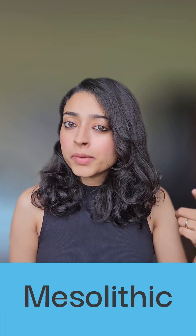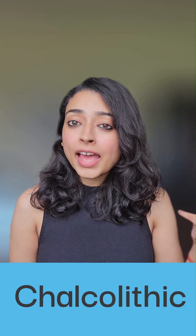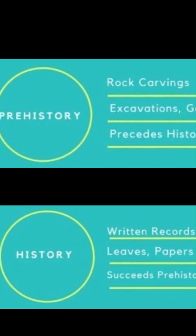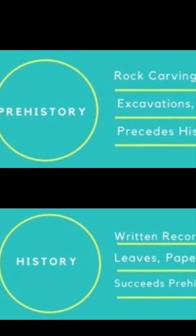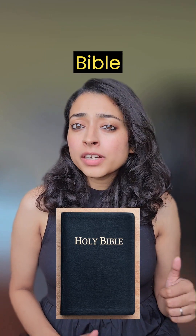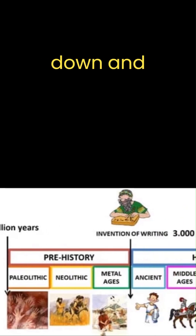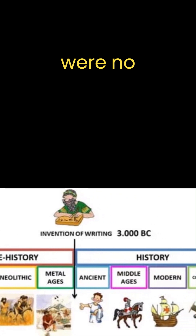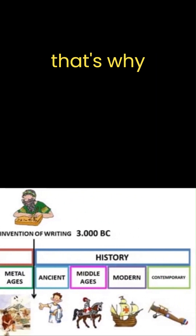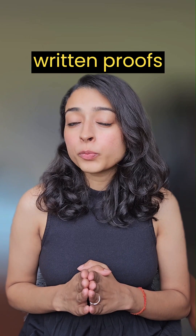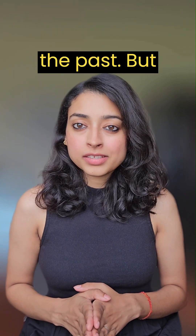Paleolithic, Mesolithic, Neolithic, Chalcolithic and Iron Age. Did you know that this distinction between prehistory and history has a bit of biblical bias? The Bible distinguishes between historical events which were written down and earlier times where there were no written records. And that's why Western history writers only relied on written proofs for reconstructing the past.